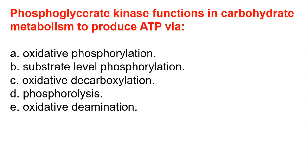Phosphoglycerate kinase functions in carbohydrate metabolism to produce ATP via: A, oxidative phosphorylation. B, substrate-level phosphorylation. C, oxidative decarboxylation. D, phosphorolysis. E, oxidative deamination. The answer is B, which is substrate-level phosphorylation.